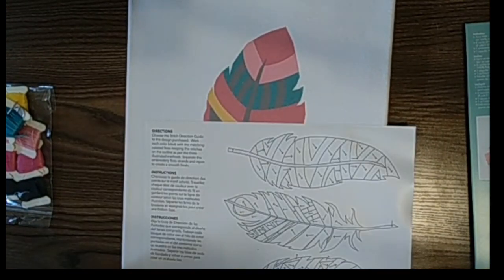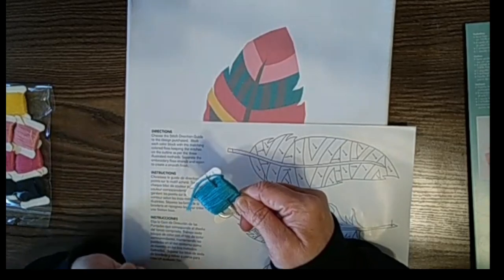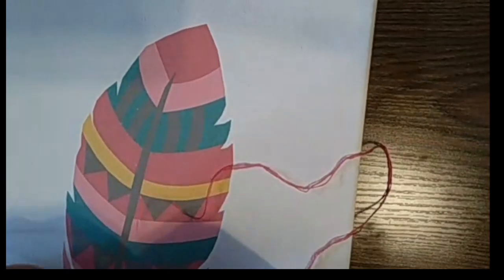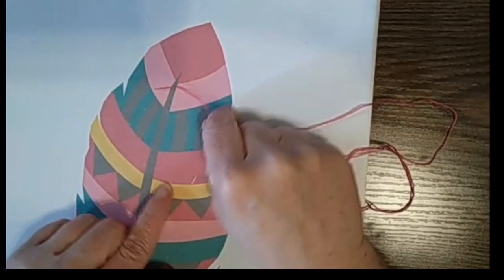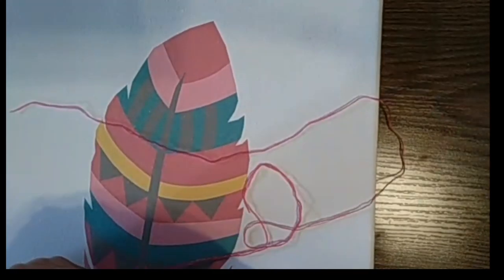Work each color block with a matching color floss, keeping the stitches on the outline as per the three illustrated methods. Separate embroidered floss strands and rejoin to create a smooth finish. My question is, each floss has six strings. So do we use just one string? After reading the instructions a few times, I have decided I'm going to use two strands of floss because I don't think that one string is enough.